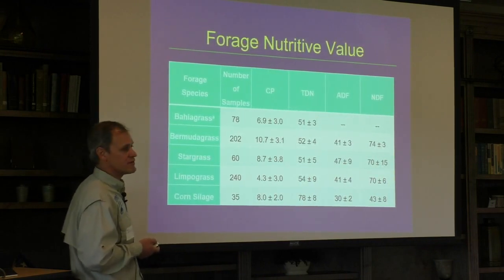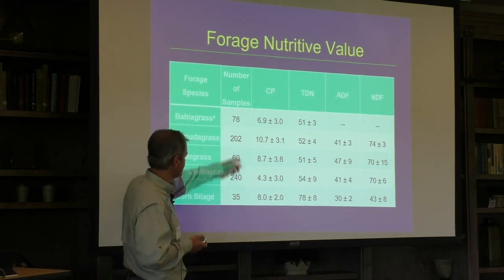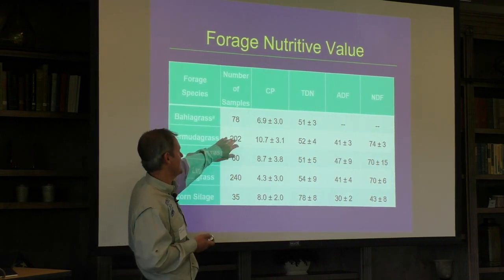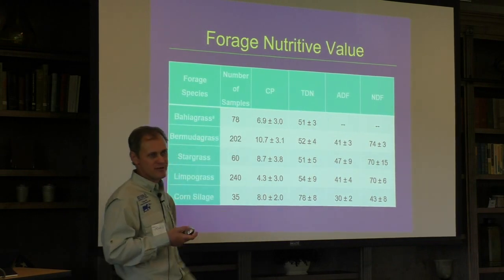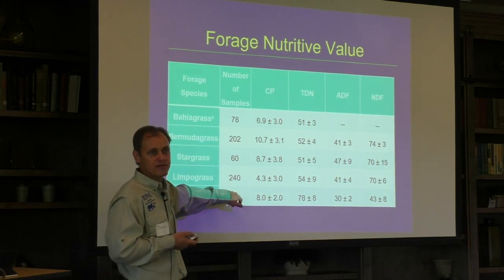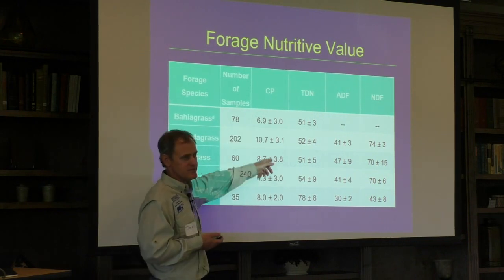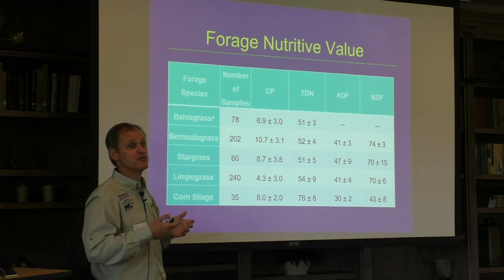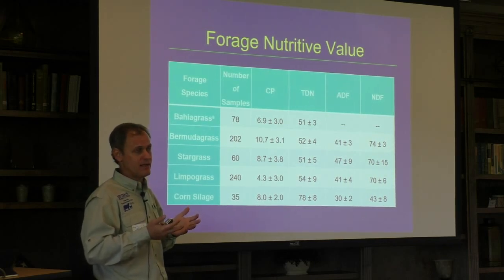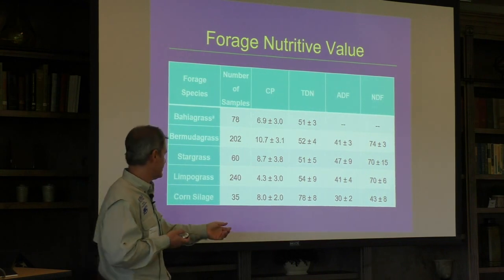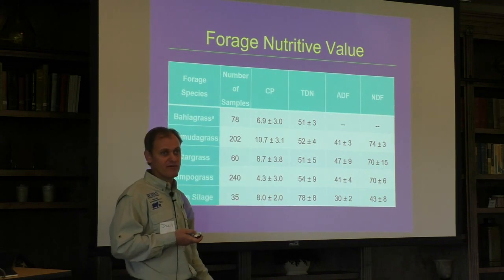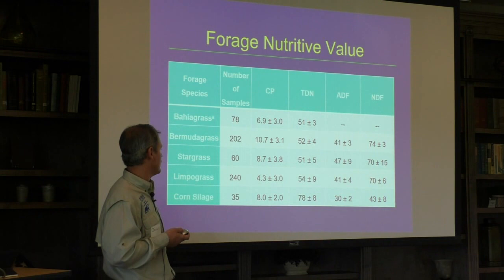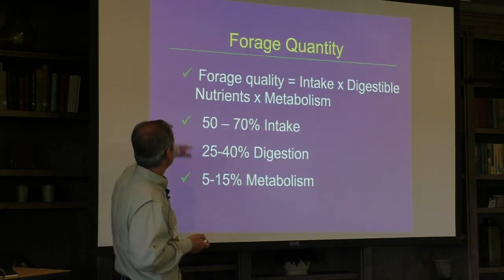Looking at our 2015 lab results from producer samples: Bermuda and limpograss are the most common submissions. Limpograss mostly comes from South Florida, and Bermuda from Central Florida. Bahia grass submissions are fewer because there's not much hay available. Corn silage comes from the dairies. When producers ask if their sample is good or bad, I say it depends on your objective, but you have an average here to compare against. A Bermuda sample over 10% protein is above average for us.